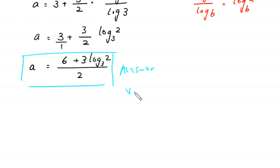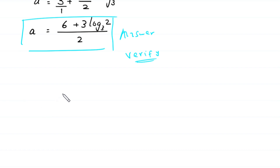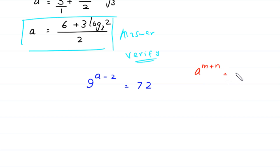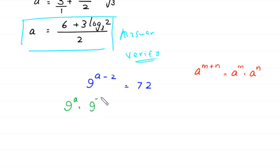Now, let us verify this value of a by putting this value in the original equation. The original equation is 9 to the power a minus 2 is equal to 72. By using the power rule a to the power m plus n is equal to a to the power m times a to the power n, this 9 to the power a minus 2 can be written as 9 to the power a times 9 to the power negative 2, which is equal to 72.